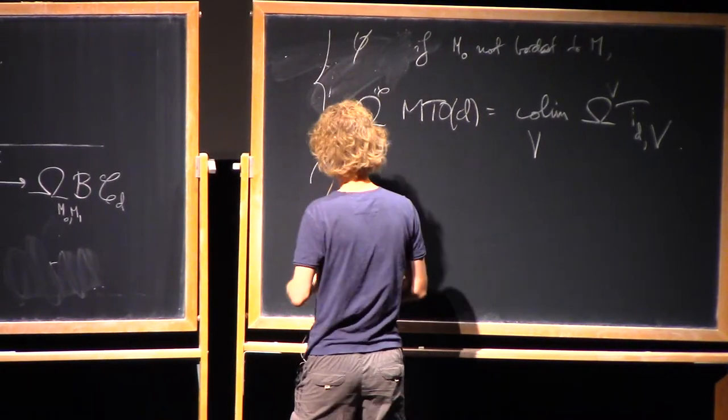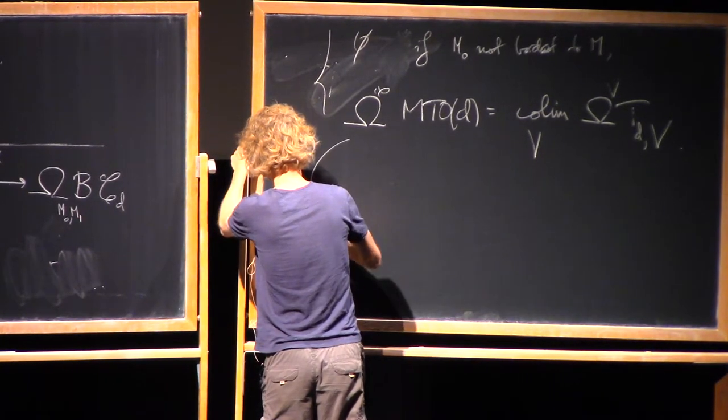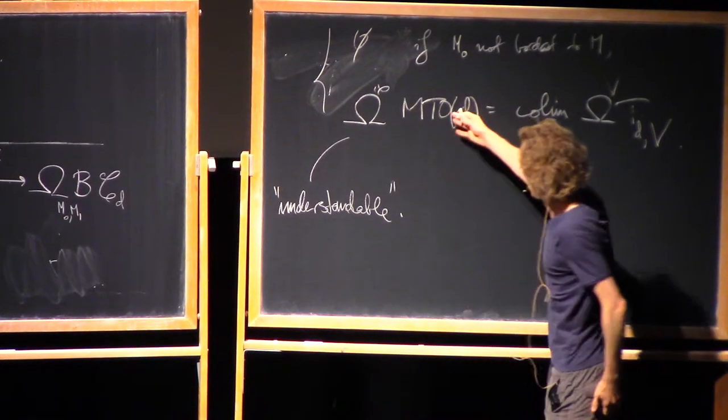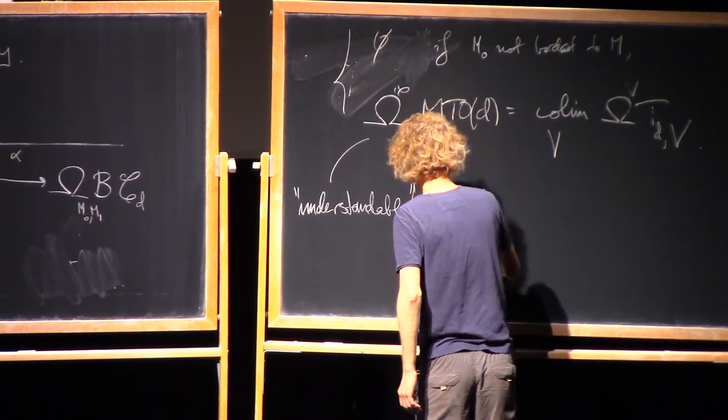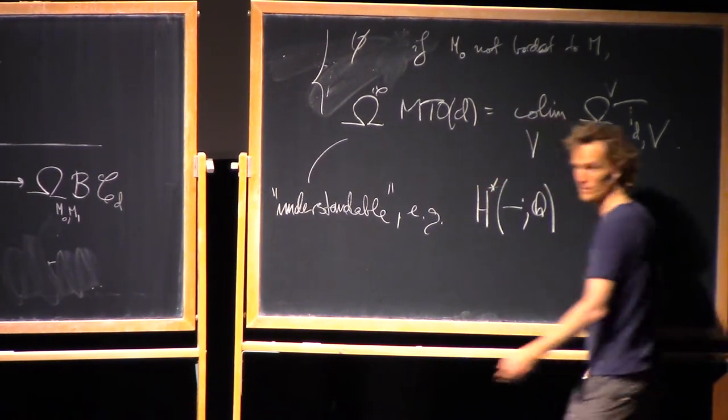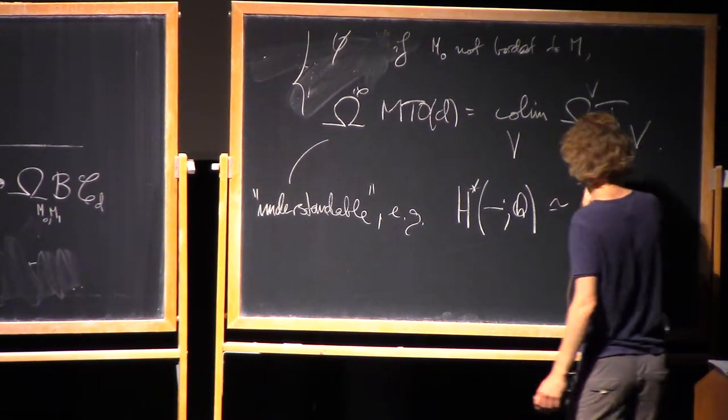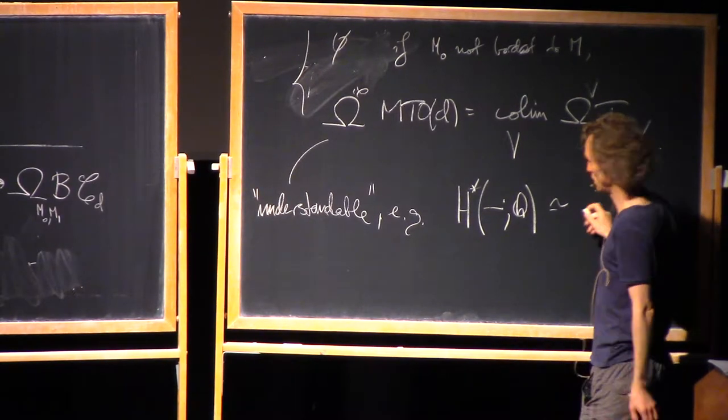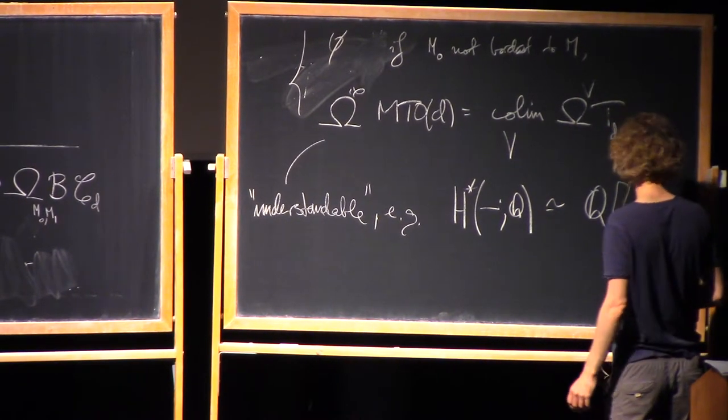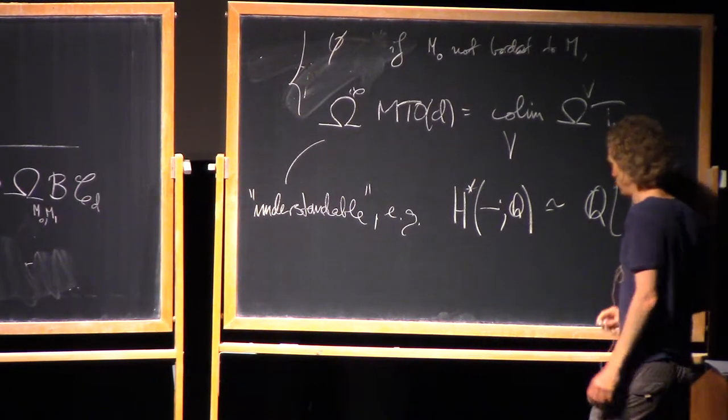The reason this is a potentially interesting thing to do is that this right-hand side is a priori a lot easier to understand. So this is kind of a, I'll take the point of view that this is understandable. For example, the rational cohomology, okay might not be connected, but the rational cohomology of a component is a polynomial ring. It's the free symmetric algebra on cohomology of a BOD, I think.